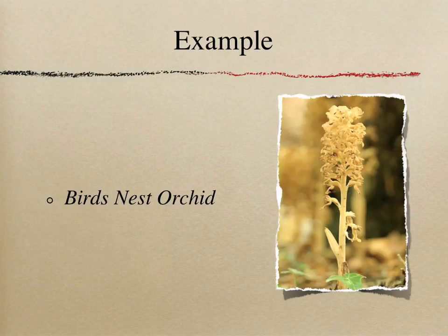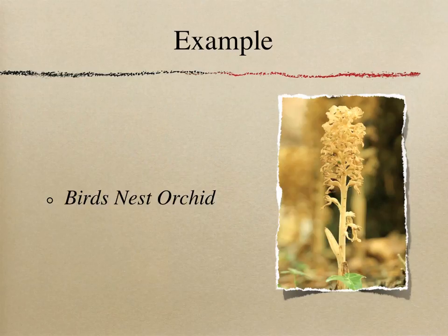A third example of a unique parasitic plant is the bird's nest orchid. What makes this plant so unique is that it lives underground, where it feeds off a fungus that is itself a parasite and is only found on the roots of beech trees. The orchid spends almost its entire life underground and does not photosynthesize. The only time it is seen above ground is when it produces a long stem with yellow flowers during the summer.